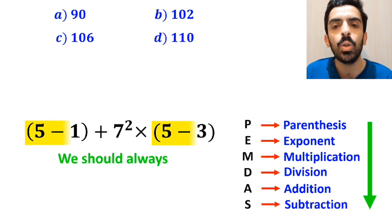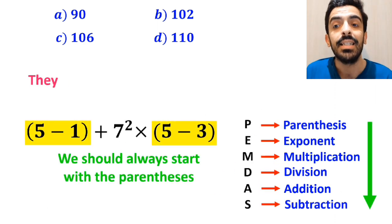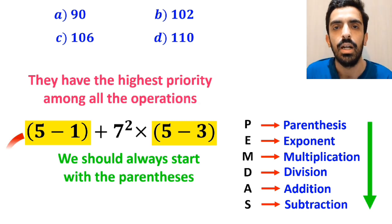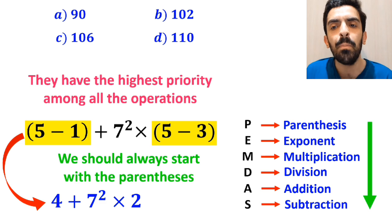According to the PEMDAS rule, we should always start with the parenthesis, since they have the highest priority among all the operations. So, instead of the original expression, we can rewrite it as 4 plus 7 squared multiplied by 2.